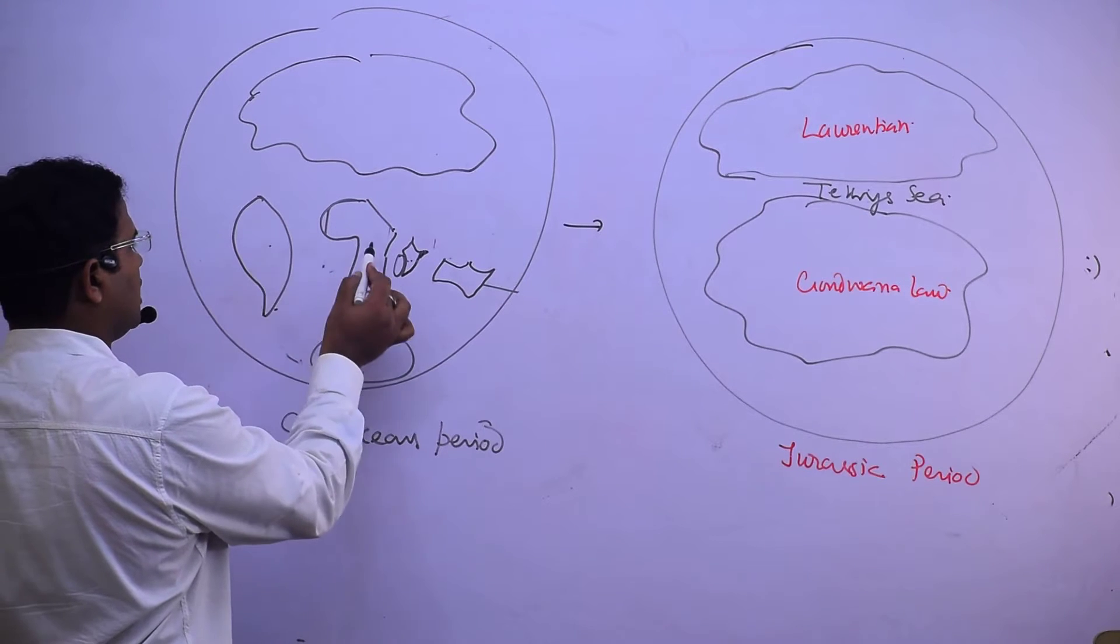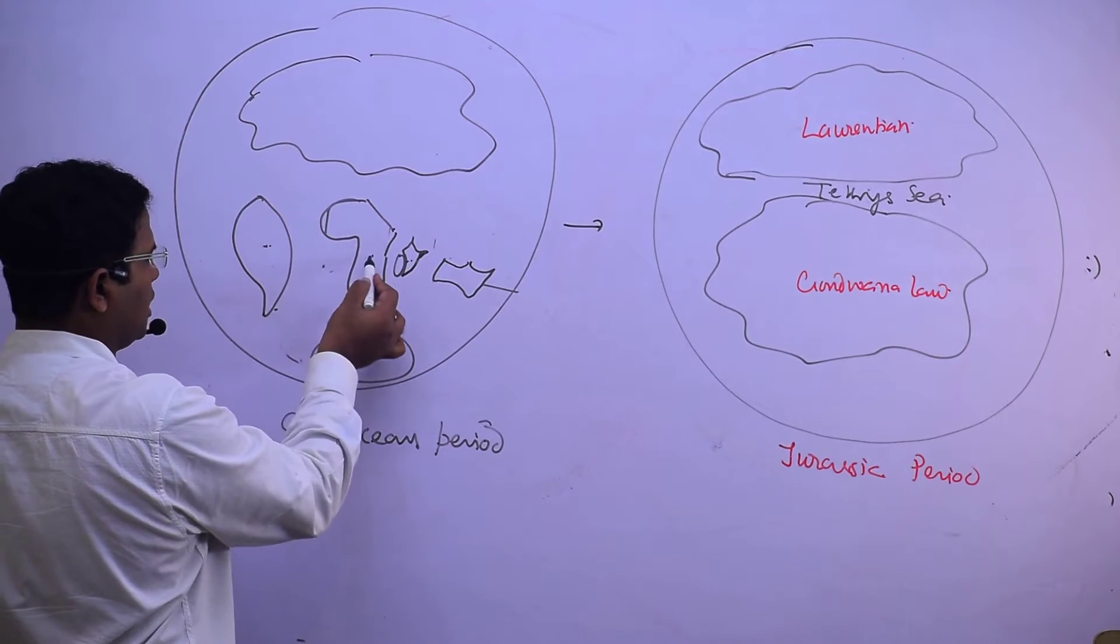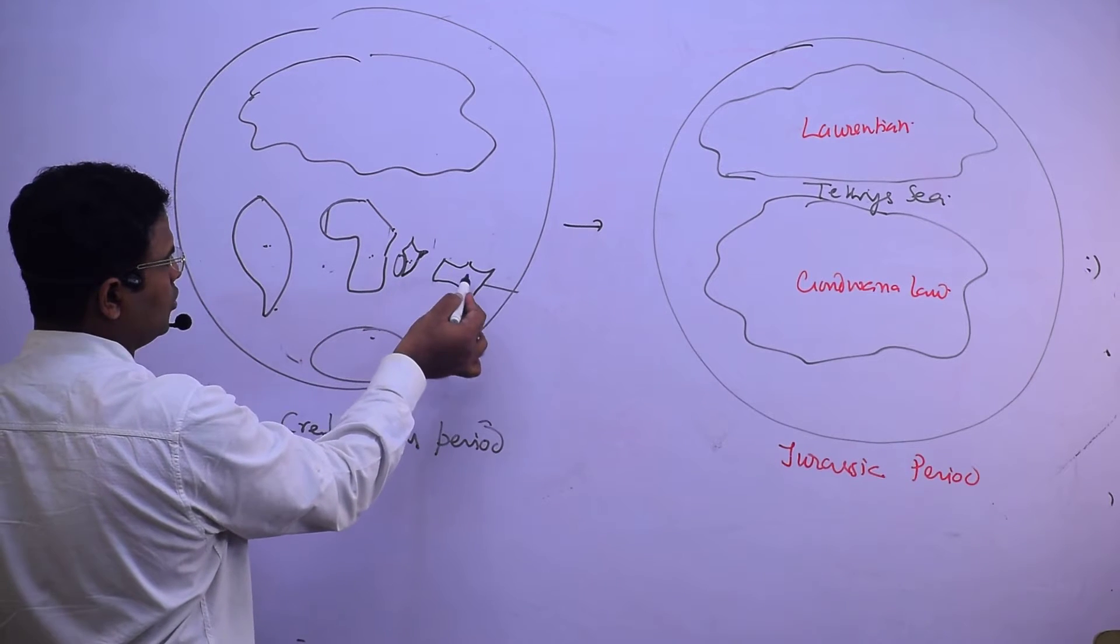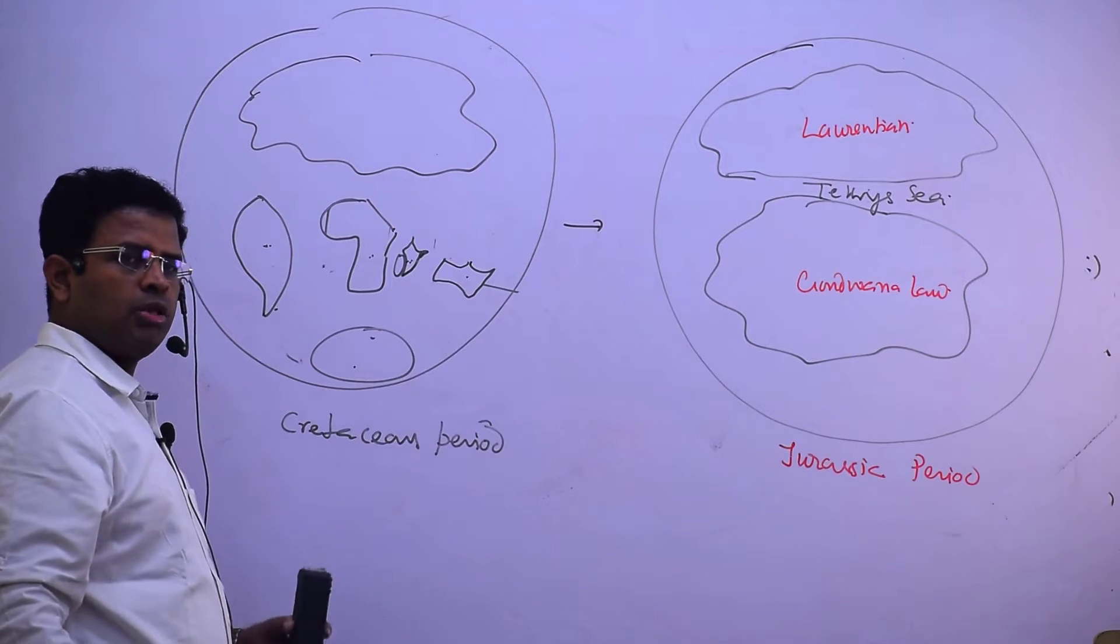South America, Africa, Indian Gondwana - all are Gondwana. South America Gondwana, Africa Gondwana, Indian Gondwana, Australia, and Antarctica. So they have been divided,